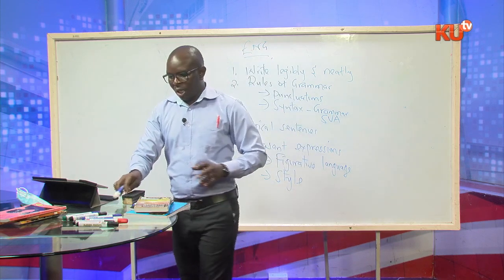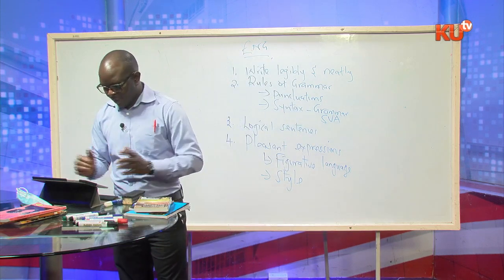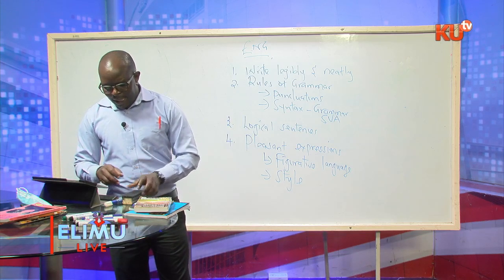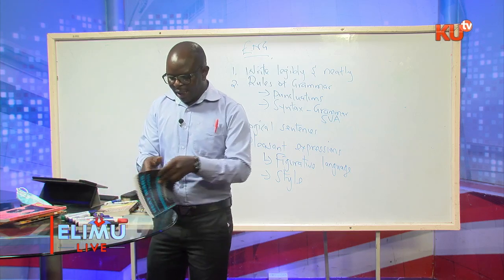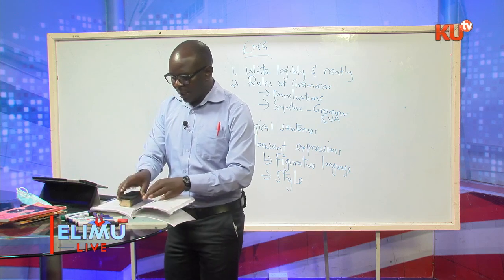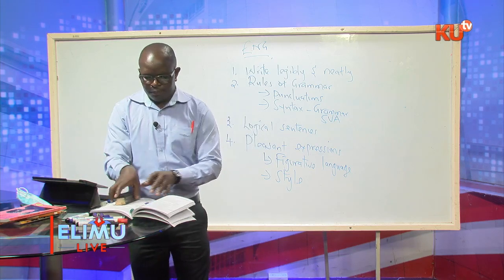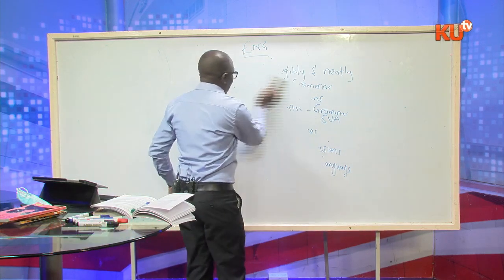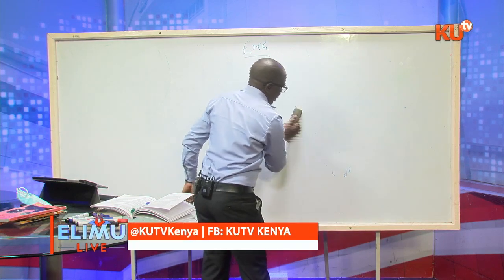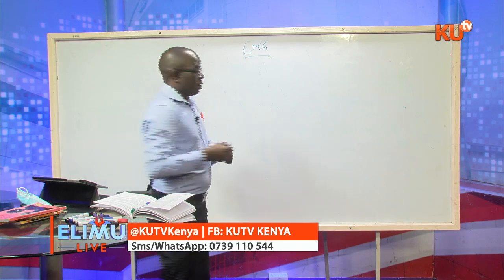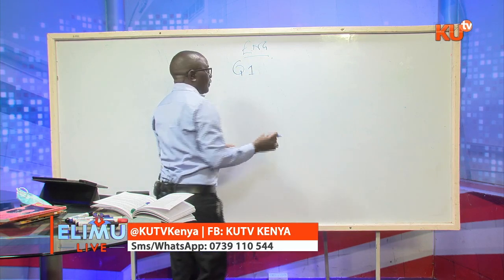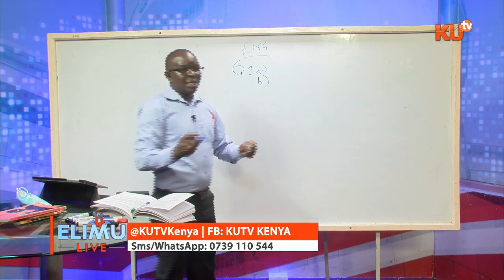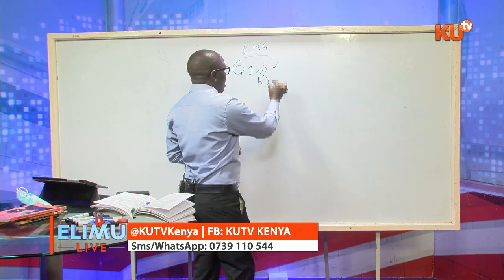Ensure that as you write you are leaving a definite spark or memories in the mind of the person marking your work. Question one comes in two different ways. In most cases it is tested as either A or B, and for several years it has come as question 1A and 1B. A student is expected to choose either 1A or 1B.